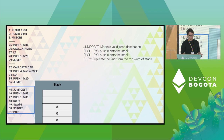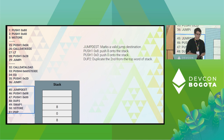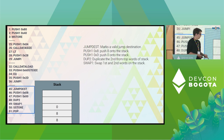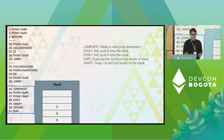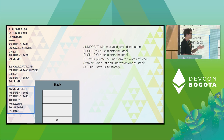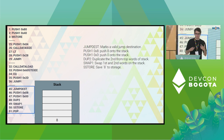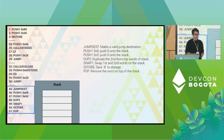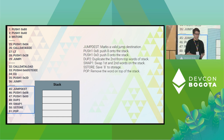But then we see DUP2, which duplicates the second-from-top word on the stack, followed by SWAP1, which swaps the first and second words. Then SSTORE — store in storage — saves 8 to the zeroth storage slot, which is what we wanted. But we also have a POP after that because there's an extra 8 remaining on the stack. Why are we duplicating and swapping? Solidity is doing extra memory management that we might not want if we're trying to be as gas-efficient as possible.